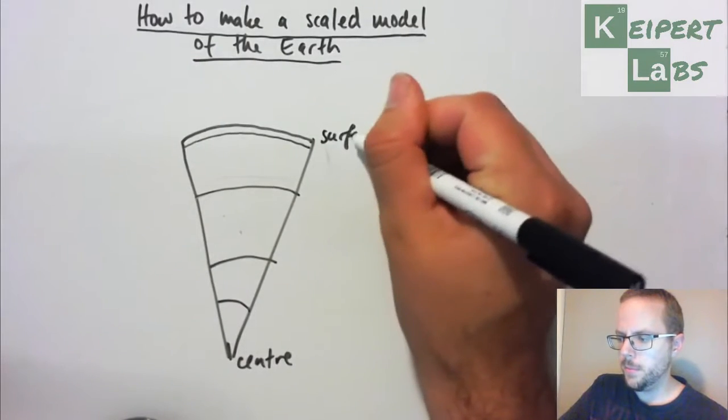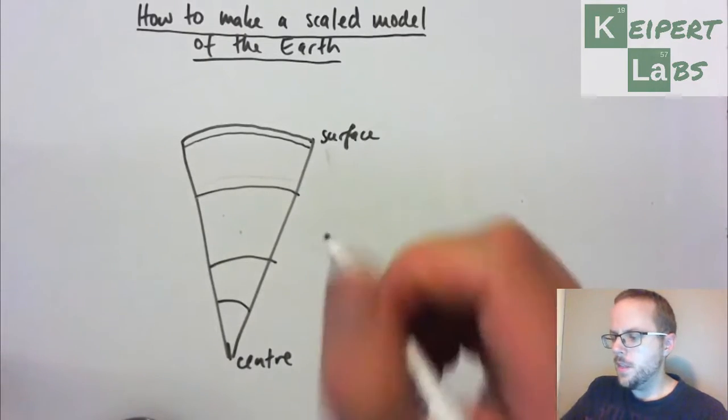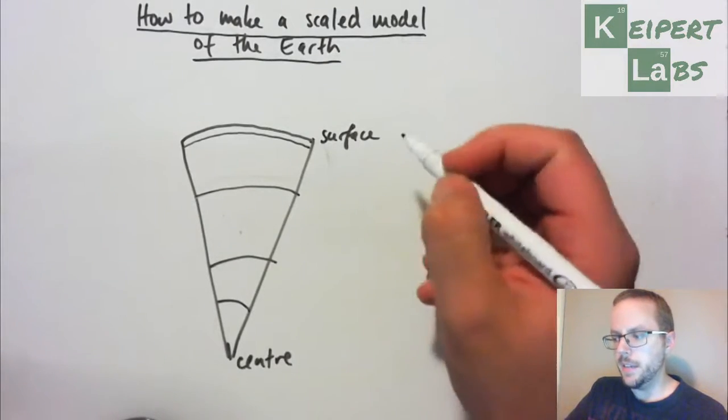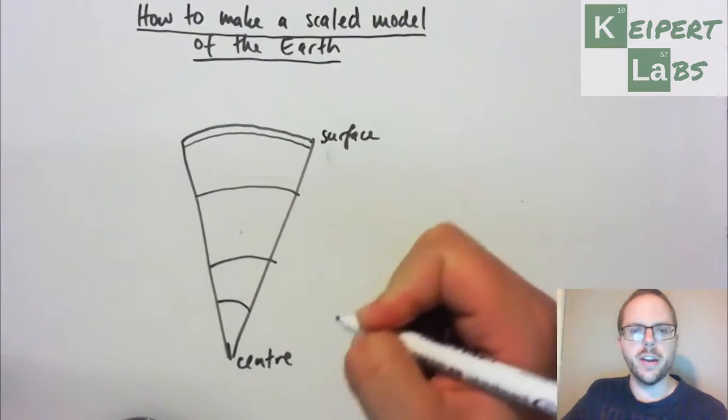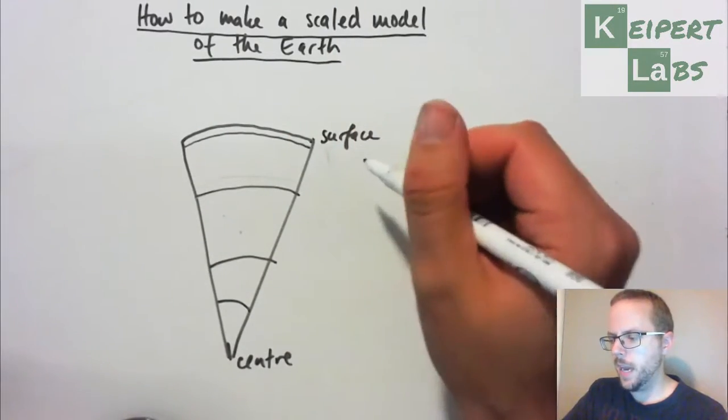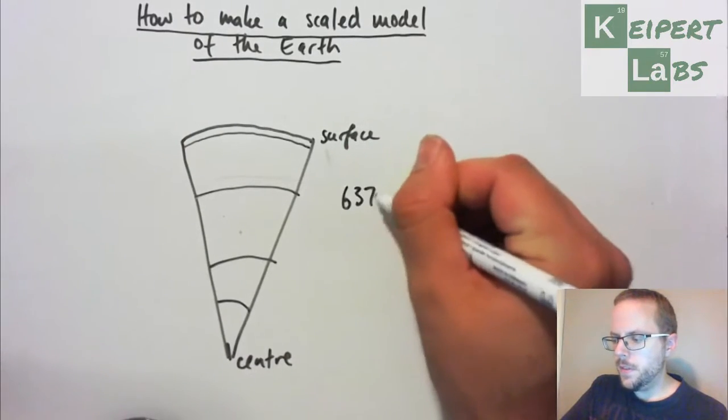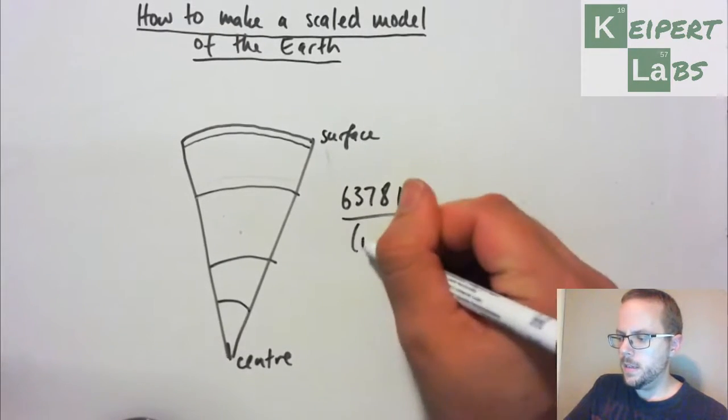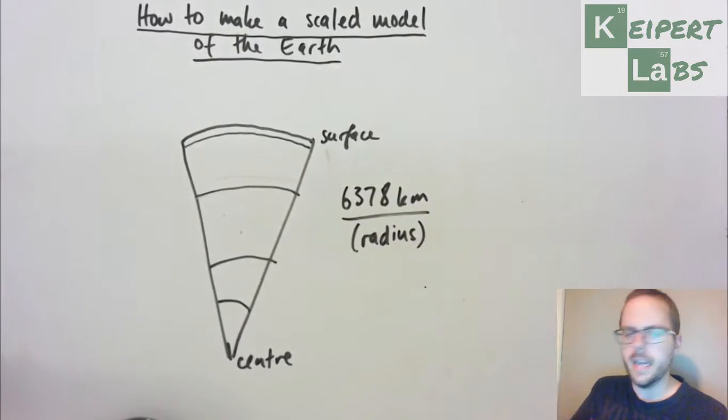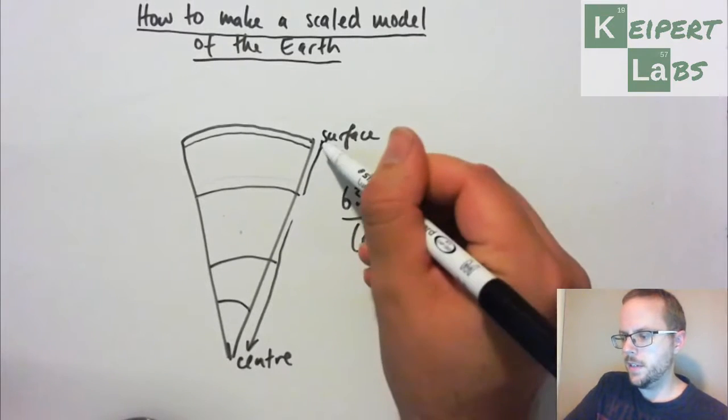So I might relabel that, going from the surface to the centre. There are a couple of things that we know about this. What we're going to be doing in this activity is to try to draw a diagram to scale of these different layers. The first is that the radius of the Earth is 6,378 kilometres. So that is the distance from the outermost surface to the very centre of the Earth.